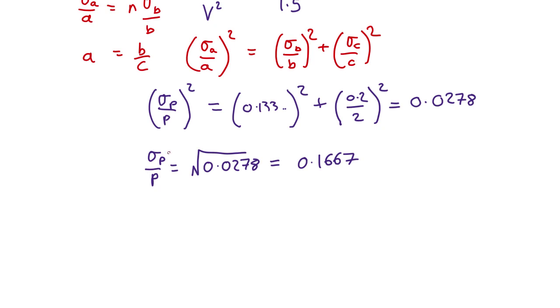We know what p is from up there. So that tells us that sigma p equals p times that equals 0.1667 times 1.125 equals 0.187. So our answer is the power equals 1.125 plus or minus 0.187.